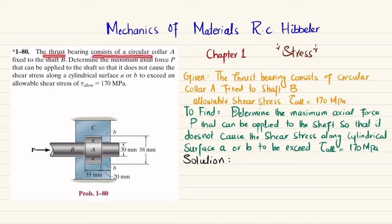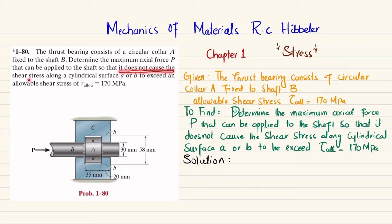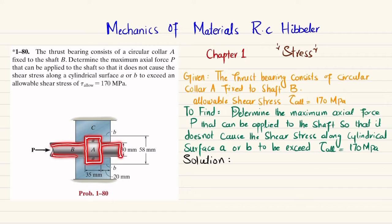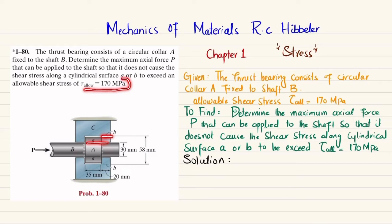The statement is: the thrust bearing consists of a circular collar A fixed to a shaft B. Determine the maximum axial force P that can be applied to the shaft so that it does not cause the shear stress along cylindrical surface A or B to exceed an allowable shearing stress of 170 megapascal.